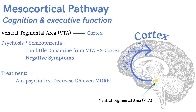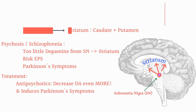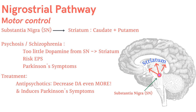How do we treat these patients? We give antipsychotics, but this ends up decreasing the dopamine that's already decreased in patients with schizophrenia and psychosis. This leads us to our third pathway, the nigrostriatal pathway. This pathway is known for motor control. Dopamine travels from the substantia nigra to the striatum, which is made up of the caudate and putamen. There is too little dopamine here, and giving an antipsychotic decreases it even more, inducing Parkinsonian symptoms and EPS.